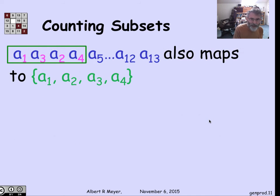Let's figure out how many to 1 this mapping is. If I look at this particular target set A1, A2, A3, A4, where else can that come from? Any permutation that has those same four elements first is going to hit this set, because all we're doing is taking the first four elements of the sequence, and if the first four elements are the same, you're going to get the same set.